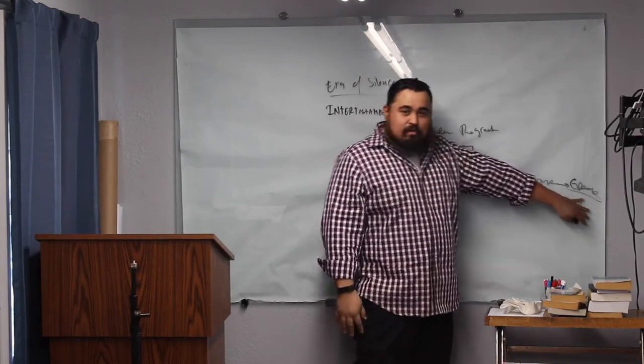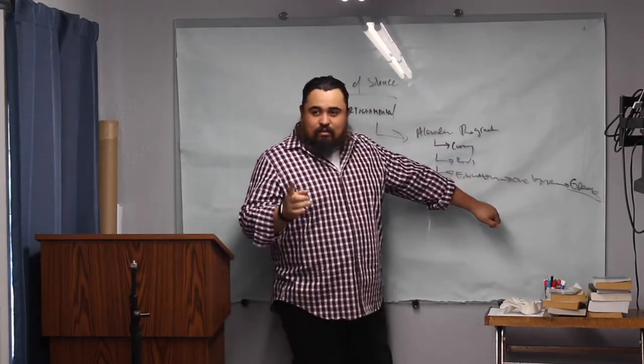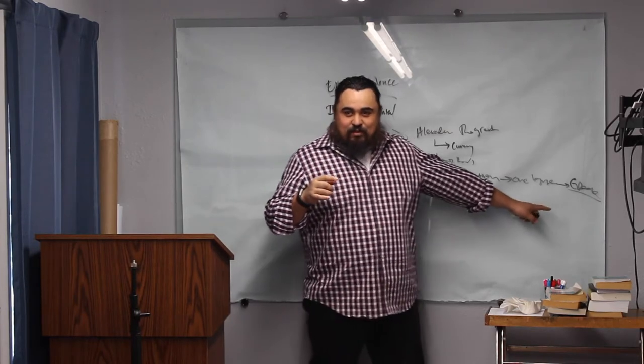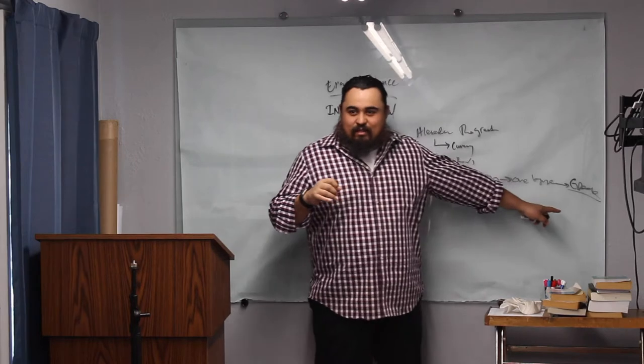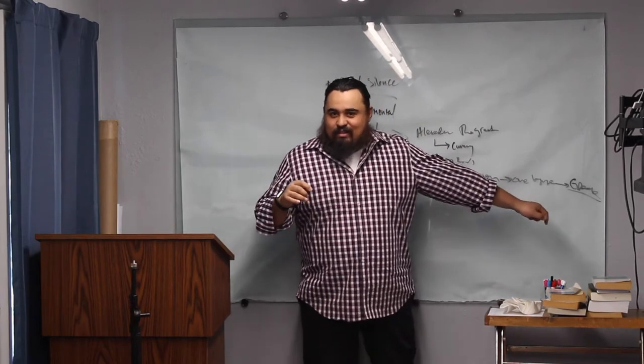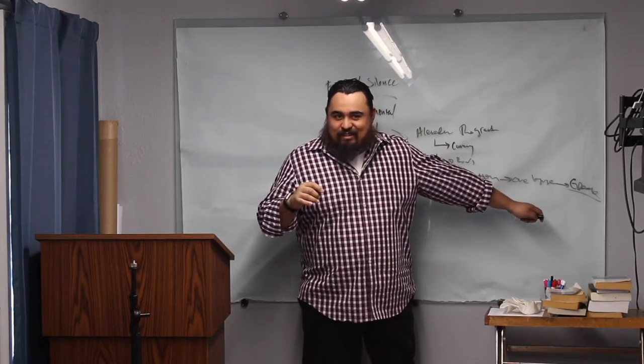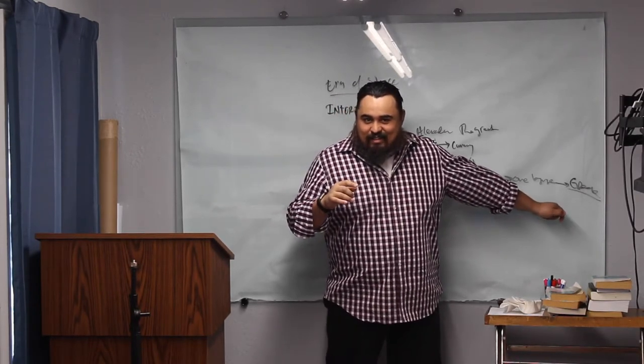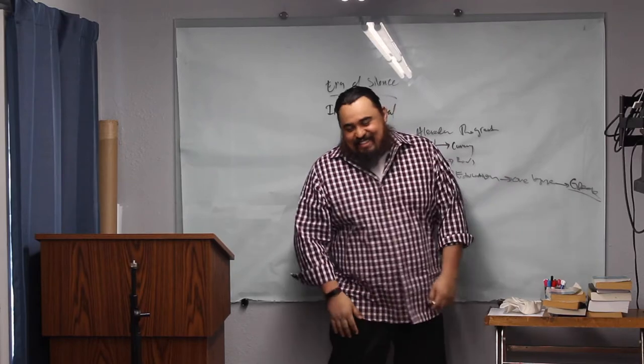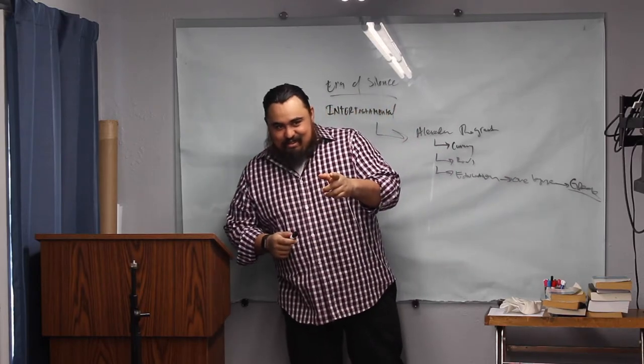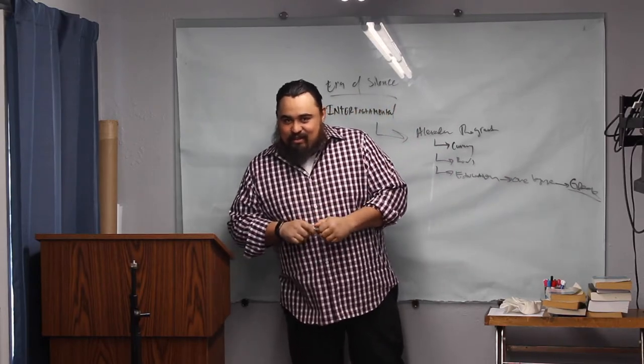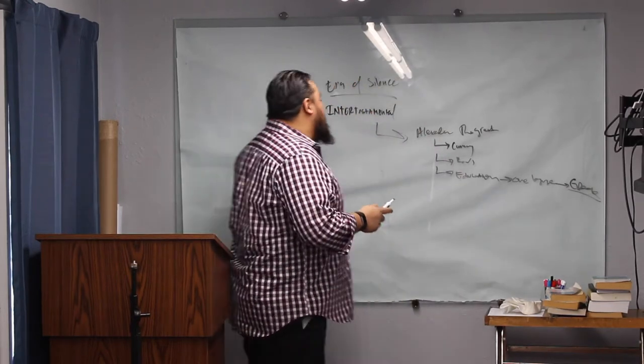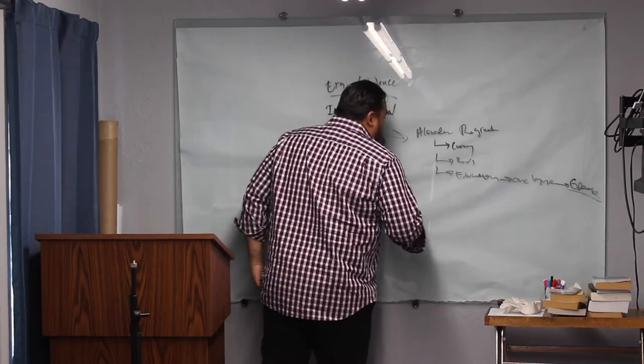Ten points for whoever can tell me what that Bible was called. I'll give you ten bucks. The Bible that was translated from the Hebrew to the Greek. By the 72. The Septuagint. Yeah. Oh, it's the Septuagint. Not the Old Testament.